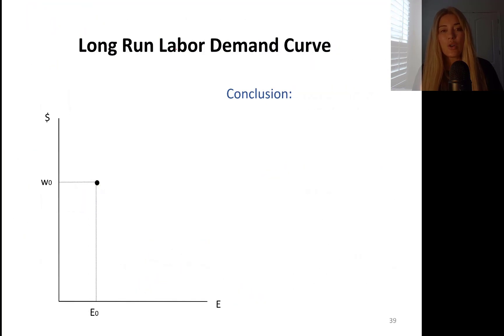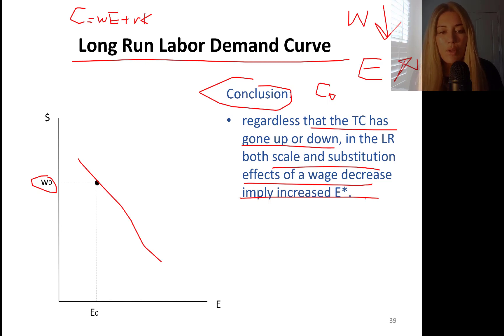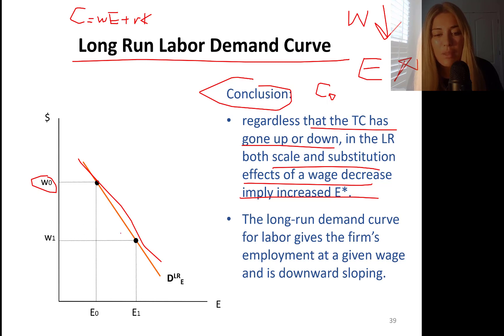Here's the conclusion. Long-run labor demand curve. What did we see? Wage went down. We saw employment go up. That was the first thing I said at the beginning of the slide. Wage rate went down. You will see a downward sloping demand curve, labor demand curve. Conclusions, regardless of the total cost, regardless of whether total cost, that's C, has gone down or up. Total cost is the wage rate times employment plus rental rate times capital. In the long-run, both scale and substitution effect says that when the wage rate decrease, the optimal level of employment will increase and vice versa, folks. In the long-run, we put the demand curve like this. Demand long-run E. Long-run demand curve for labor is downward sloping. I'll see you in part seven.